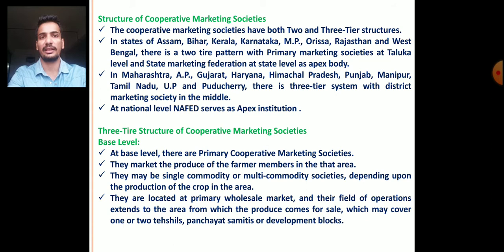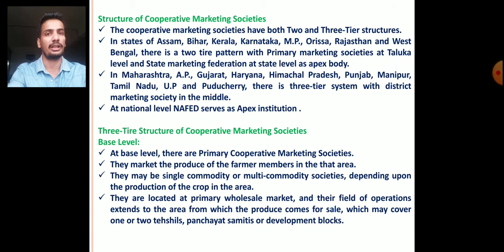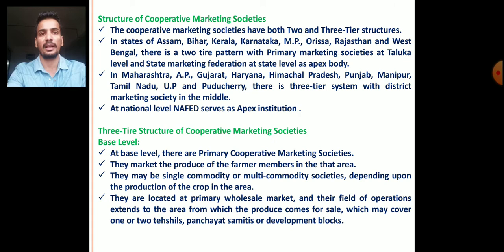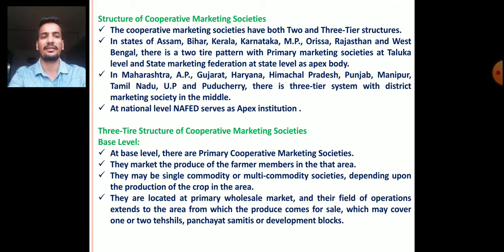In the three-tier structure, there are three levels. The first is the base level, which is at the village level. At the base level, there are primary cooperative marketing societies that market the produce of farmer members in that particular area. They may be single commodity or multi-commodity societies depending upon the production of crops in that region. They are located at primary wholesale markets and their field of operation extends to the area from which produce comes for sale, which may cover one or two talukas, panchayat samitis, or development blocks.